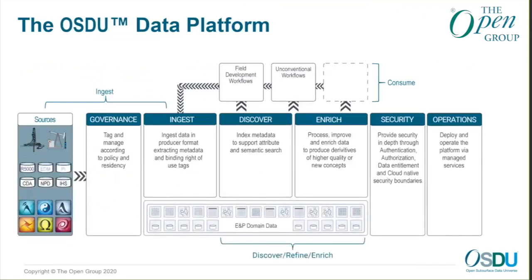Let's introduce the OSDU data platform. Some of you may have seen the slides from the virtual face-to-face meetings. This shows you the data flow and the different aspects we need to think about. The flow goes from left to right. Security and operations are the cross-cutting concerns that serve the whole platform. Anytime we bring in data from any external source — be it a file, a database, a national data center, vendor data source, whatever — we need to make sure that governance is put into the data.